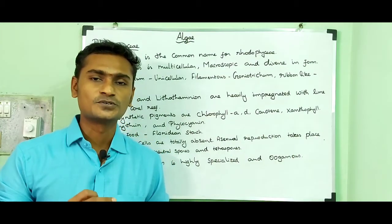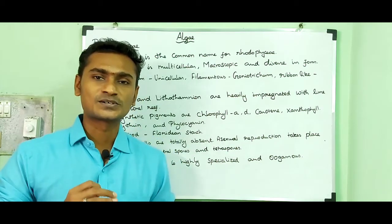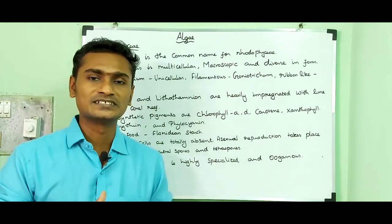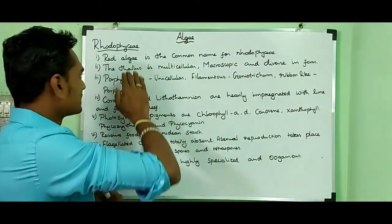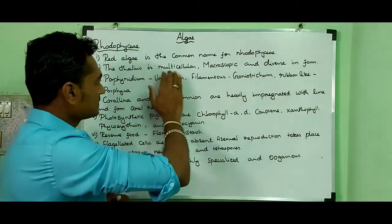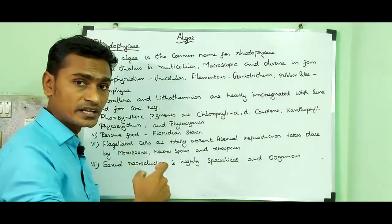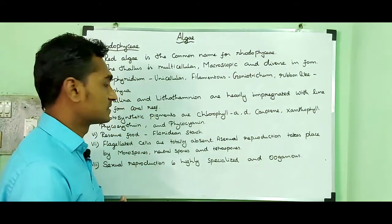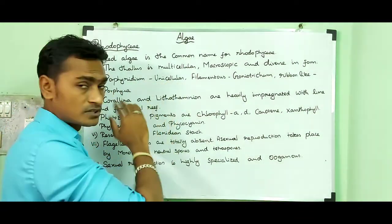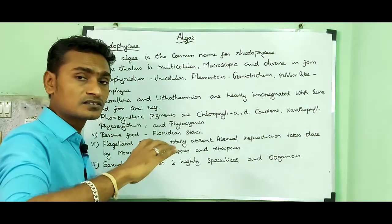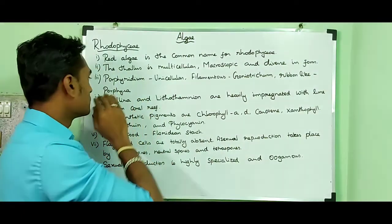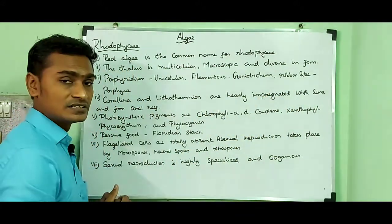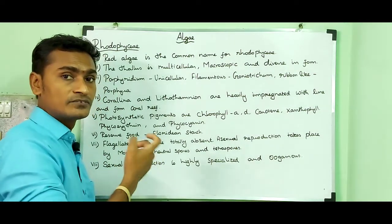The class Rhodophyceae is otherwise called red algae because the algae possess a pigment called phycoerythrin. Due to the presence of phycoerythrin, the algae looks red in color. The thallus is multicellular and macroscopic, differentiated into root-like, leaf-like and stalk-like structures. Porphyridium is unicellular; Goniotrichum is filamentous; some show ribbon-like thallus. Corallina and Lithothamnion are heavily impregnated with lime and form coral reefs.